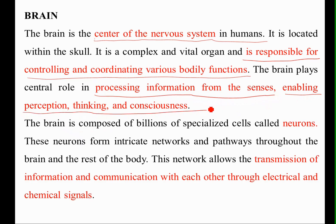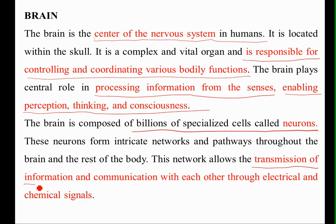The human brain is slightly different from the animal brain in terms of its process and function. The brain is composed of billions of specialized cells called neurons. These neurons form intricate networks and pathways throughout the brain and the rest of the body. This network allows the transmission of information from one region to another through electrical as well as chemical signals.